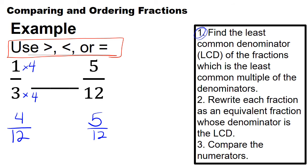And now we need to determine using greater than or less than or equal to 4 twelfths is what to 5 twelfths. And so now all we have to do is look at the numerator here. And we know that 5 is greater than 4. So in saying this, I would say that 4 twelfths is less than 5 twelfths.